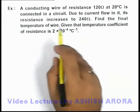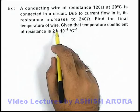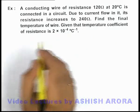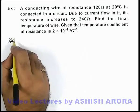Now we are required to find the final temperature of the wire. It is also given that the temperature coefficient of resistance is 2 × 10^-4 per degree Celsius.